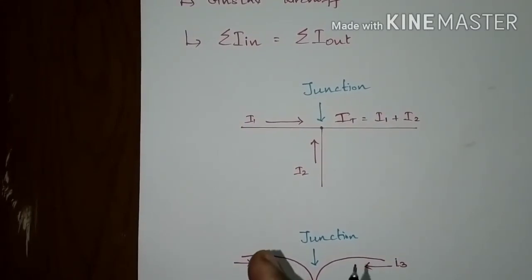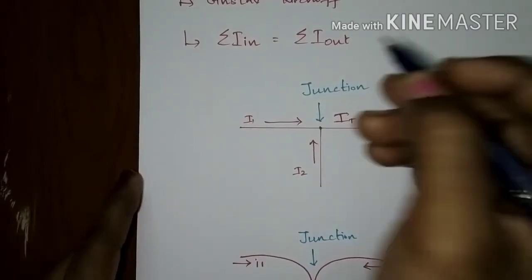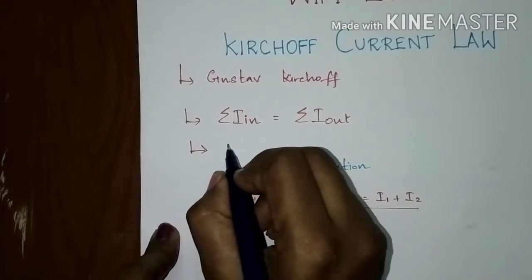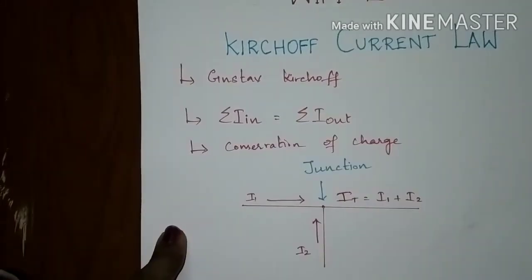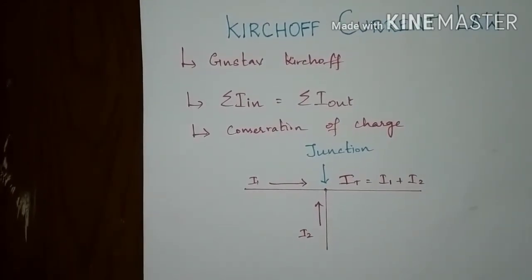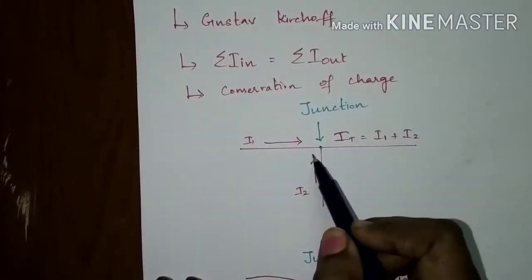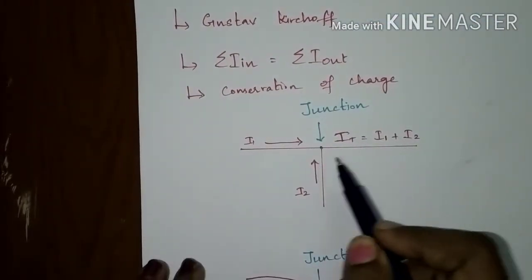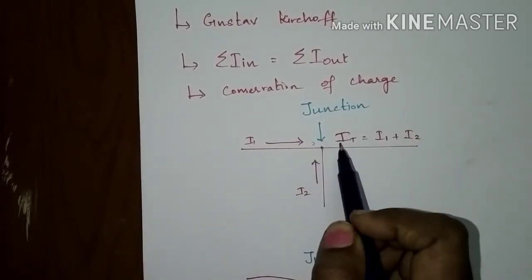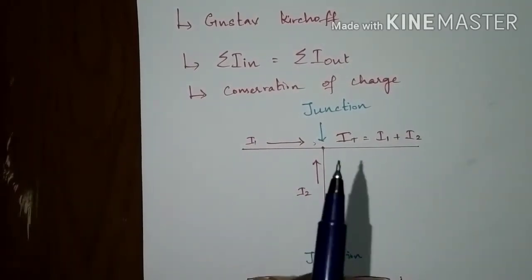This idea by Kirchhoff is commonly known as conservation of charges. Kirchhoff's current law can also be termed as conservation of charges, since the current is conserved around the junction with no loss of current. Here at this junction, current is entering and current is leaving — there is no loss of current. So this law is termed as conservation of charges.